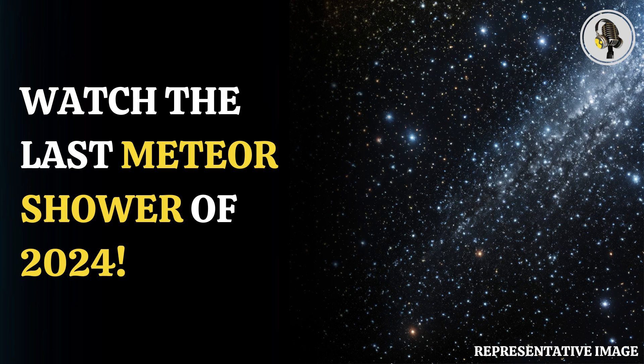The Ursid meteor shower happens every year between 17 and 26 December, with its peak this year expected to bring up to 10 meteors per hour, according to earthsky.org. This gentle shower is caused by debris from Comet 8P-Tuttle, which is about 5 kilometers wide and orbits the sun every 13.6 years.